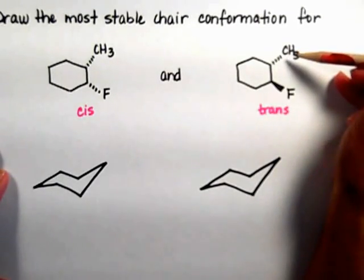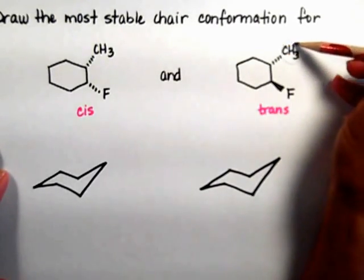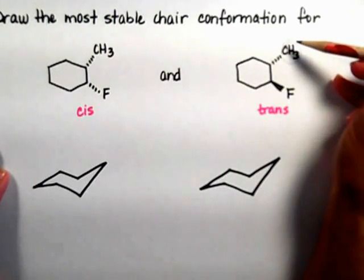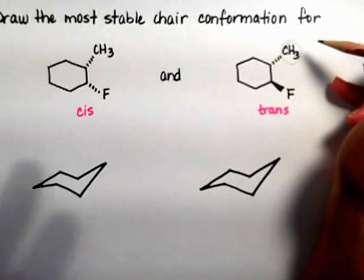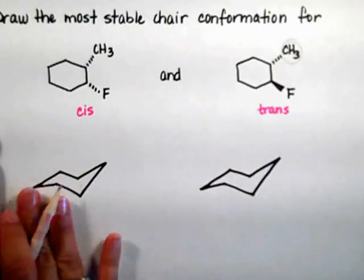So between fluorine and methyl, the methyl occupies more space. It's a bigger group, so I am going to put the methyl on the equatorial position on both my chairs.